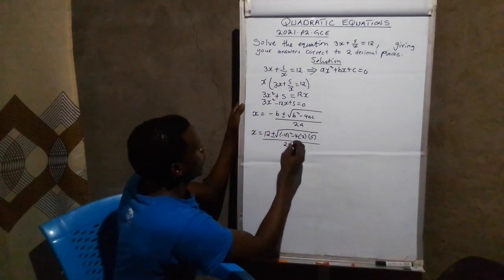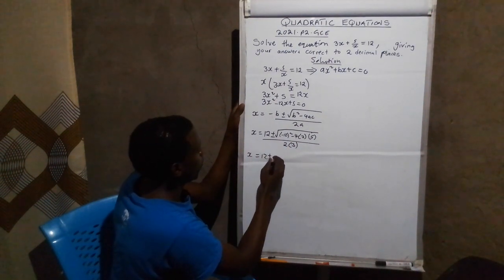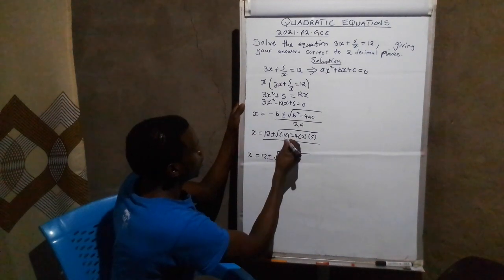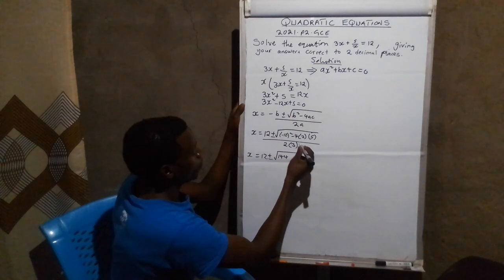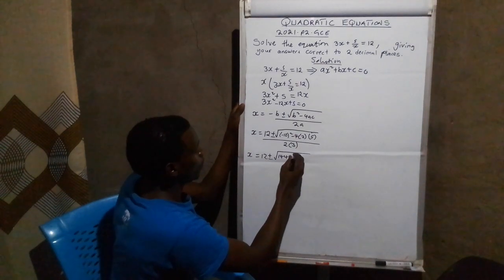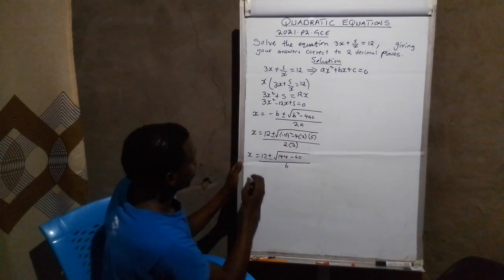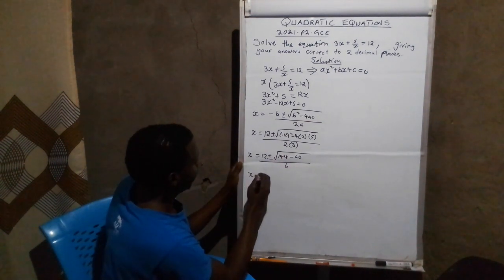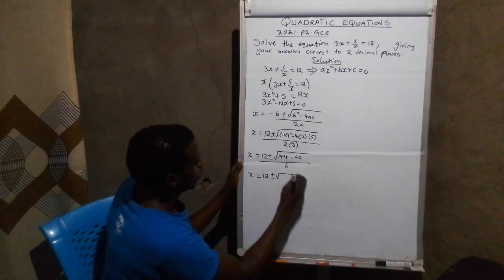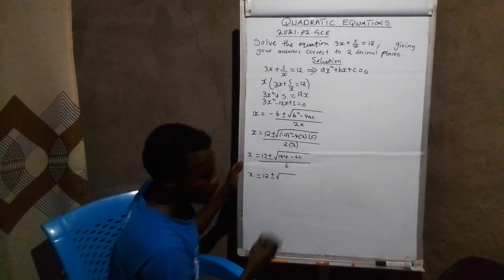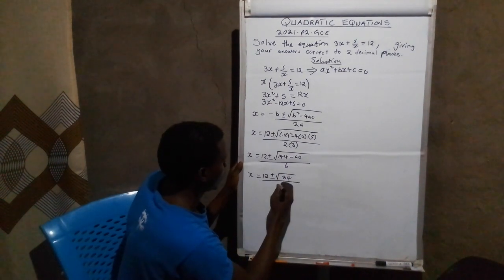Next step, this is 12 plus or minus root of negative 12 squared, which is 144. Negative 4 times 3 is 12. 12 times 5 is 60. So we are going to have negative 60. Everything over 6. This implies that x equals 12 plus or minus root of 144 minus 60, which is 84, everything over 6.